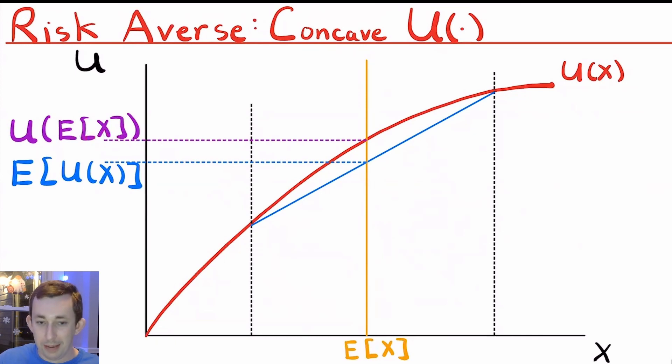Now, if they are doing this gamble, they're going to have an expected utility, which is 50% of the utility gained from this amount and 50% of the utility of this amount. So we put them together and we get this blue amount here. And you can see that the utility of the expected value is greater than the expected utility. This makes sense.